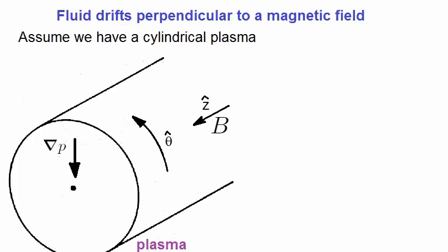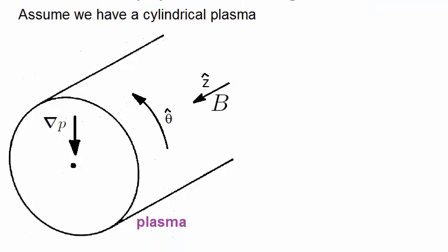Let's apply the momentum equation to find the drift in a perpendicular direction to a magnetic field. So here we have a cylindrically symmetric plasma, where the magnetic field B is along the z-direction, which is the axis of symmetry of the plasma. We also have a pressure gradient, which is highest at the centre and becomes less as one moves out radially.